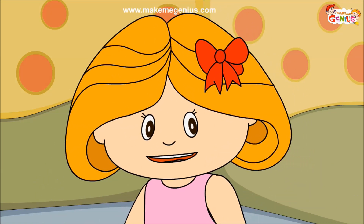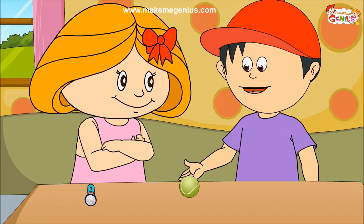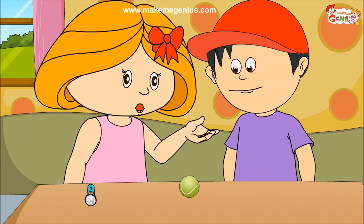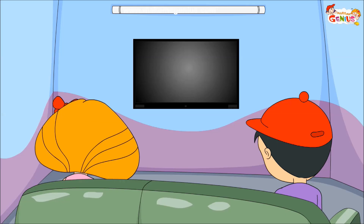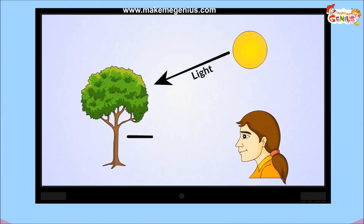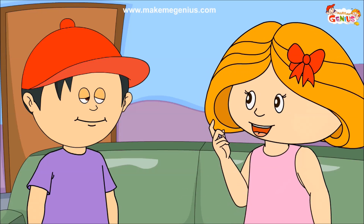When light hits something, it bounces back and the bounced light comes back into our eyes. Because of this bouncing back of light, we can see things. That is why we need light to see anything. And this bouncing back of light is called reflection of light. Can you see that the light from the sun hits the tree and gets reflected? Due to this reflected light, we can see the tree.